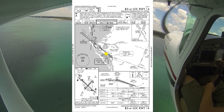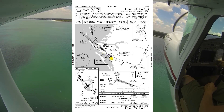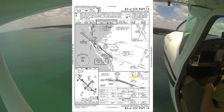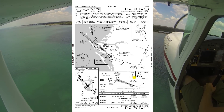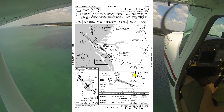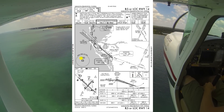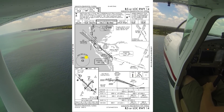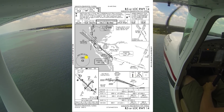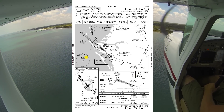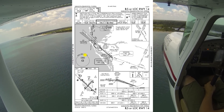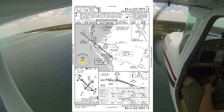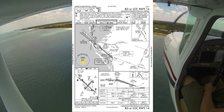If we have to go missed for any reason, we'll plan to go straight ahead, 1,000 feet, and follow tower instructions. Our MSA is 2,800 feet, so if we can get higher than that — if we lost comms — then we should be safe of all obstacles, and that's within 25 miles based off the SRQ VOR.